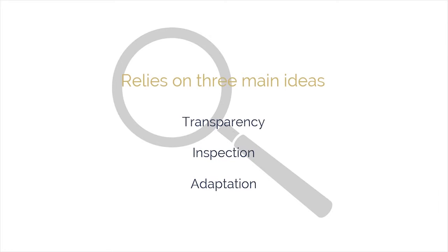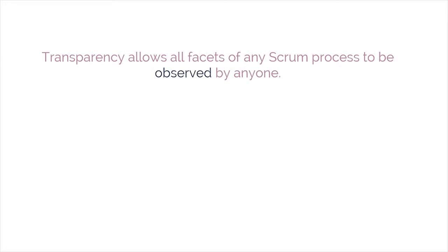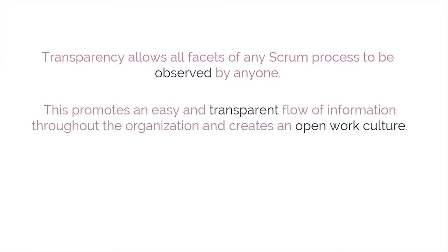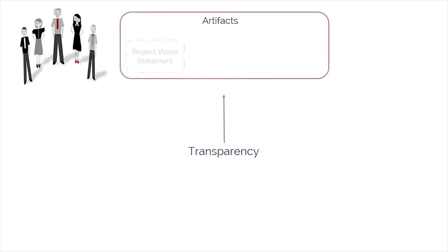Let's start with the first idea: transparency. Transparency allows all facets of any Scrum process to be observed by anyone. This promotes an easy and transparent flow of information throughout the organization and creates an open work culture. In Scrum, transparency is provided by openly sharing the project vision statement, which can be viewed by all stakeholders and the Scrum team.